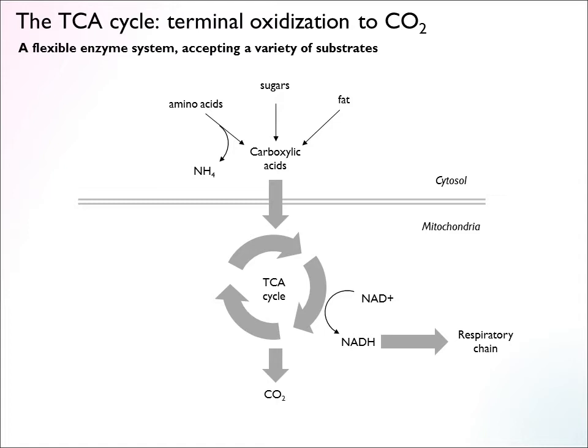The way it really works is that a variety of compounds — amino acids, sugars, and fats — can be converted in various steps into certain carboxylic acids, a few central metabolites which fit into the TCA cycle and are actually components of the TCA cycle. These carboxylic acids can then be oxidized in the cycle, and energy can be extracted from this.